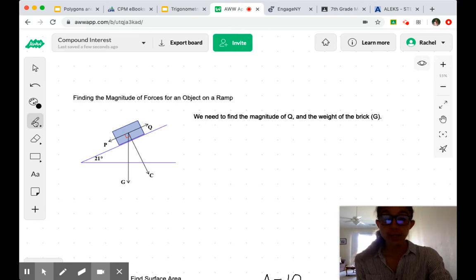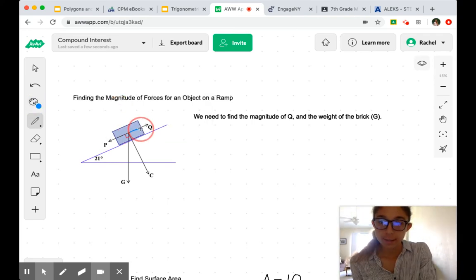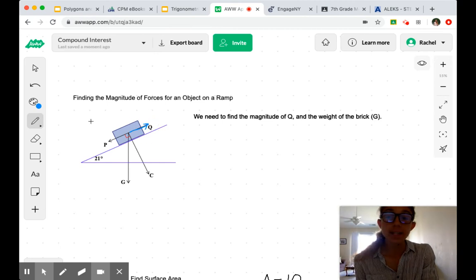They use trig and right triangles, and then a little bit of logic. We've got our object on a ramp here and we need to find the magnitude of Q, so this thing right here. That was hard to see.